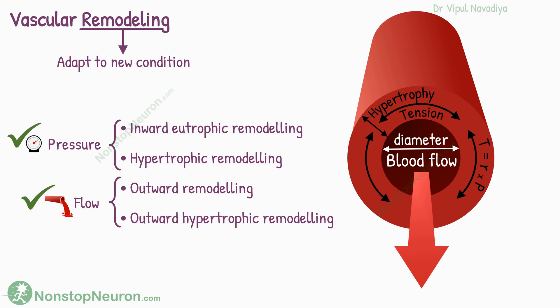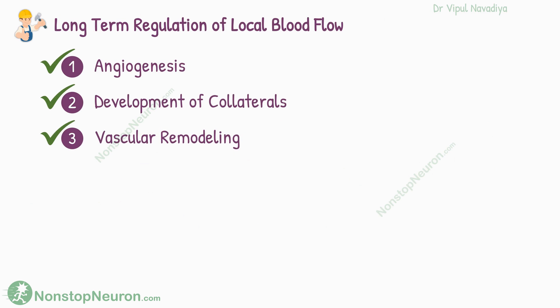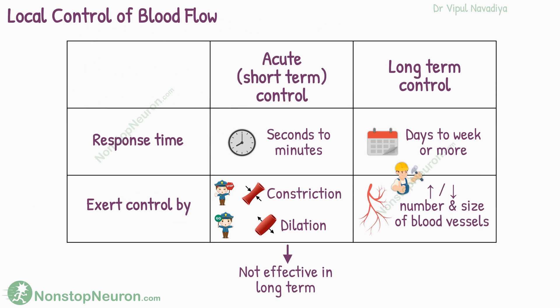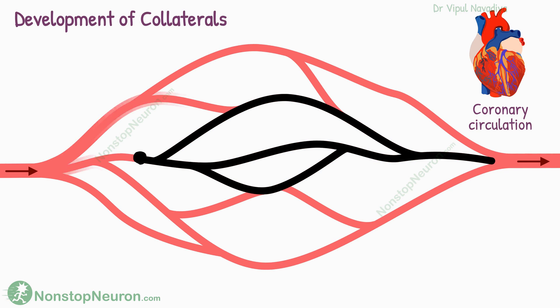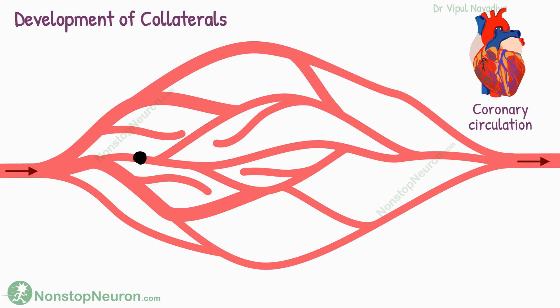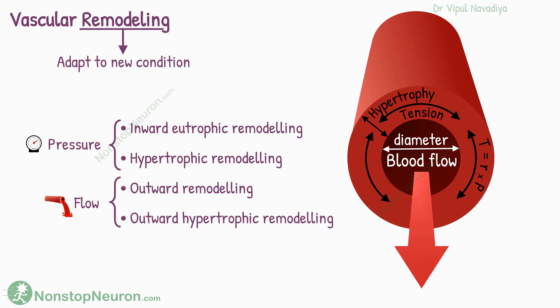These were all the responses to increases in blood pressure and flow. A decrease in pressure and flow produces opposite effects: chronic fall in pressure causes thinning of the vessel wall, and chronic fall in blood flow causes the lumen of the vessel to get narrower. So these were all the mechanisms of long-term regulation of local blood flow. When the nutrient demand for the tissue is increased for a long time, various control mechanisms try to fulfill this demand by bringing about changes in size and number of blood vessels. Angiogenesis creates new vessels, blocking vessels causes the development of collaterals in channels still connected, and remodeling adapts the vessel wall to new conditions.